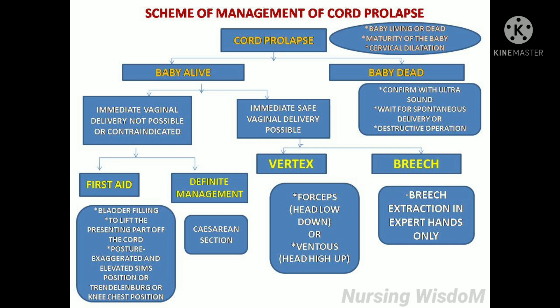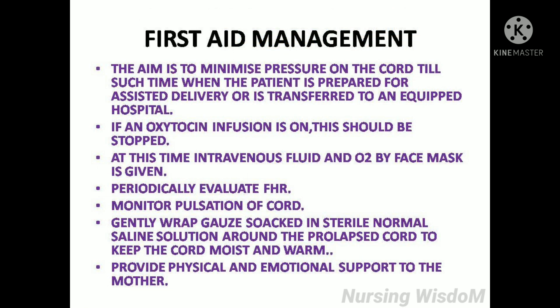If immediate vaginal delivery is not possible or is contraindicated, first provide first aid to relieve compression from the umbilical cord, then once stabilized proceed to definitive management. The aim of first aid is to minimize pressure on the cord until the patient is prepared for assisted delivery or transferred to an equipped hospital. If an oxytocin infusion is running, it should be stopped. Intravenous fluid and oxygen by face mask should be given. Periodically evaluate FHR and monitor pulsation of the cord. Gently wrap gauze soaked in sterile normal saline solution around the prolapsed cord to keep it moist and warm, and provide physical and emotional support to the mother.